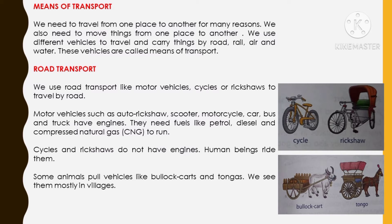The vehicles which run on the road are called road transport. We use road transport like motor vehicles, cycles or rickshaws to travel by road. Motor vehicles such as auto rickshaw, scooter, motorcycle, car, bus and trucks have engines. They all run on engines and need fuel like petrol, diesel and compressed natural gas (CNG) to run. Without fuel, they cannot run.